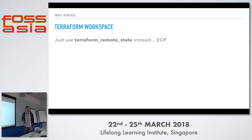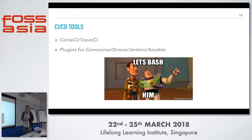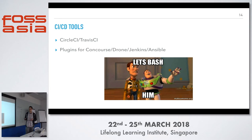Terraform Workspace is a feature that allows you to split your code and execute it in slightly different ways. But if you read the documentation and think this is magic that will help you further on — don't, and just skip it. For CI/CD tools, there are managed systems like CircleCI and TravisCI, and if you manage things yourself there are plugins for Concourse, Drone, Jenkins, and even Ansible. But bash will still be required extremely often to call Terraform with different parameters.